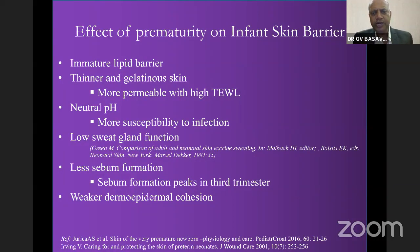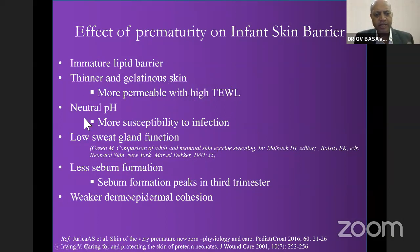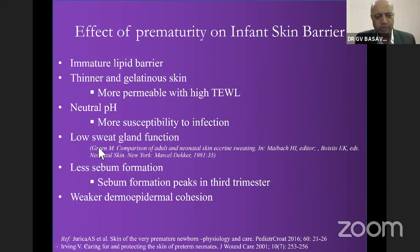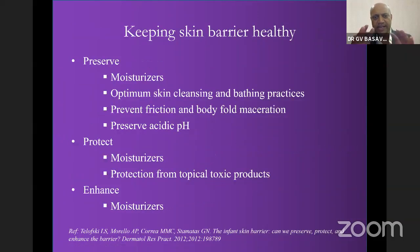When looking at the effect of prematurity on the infant skin barrier: there is an immature lipid barrier, thinner and gelatinous skin, and more permeable skin with higher transepidermal water loss. In the newborn and infancy, the pH is usually neutral, which makes the skin more susceptible to infection. There are low sweat gland functions, less sebum formation — sebum formation peaks in the third trimester — and weaker dermal-epidermal cohesion, making the infant more susceptible to barrier disruption.